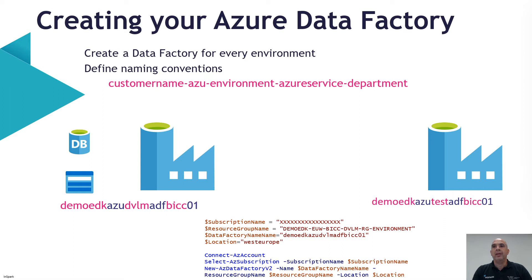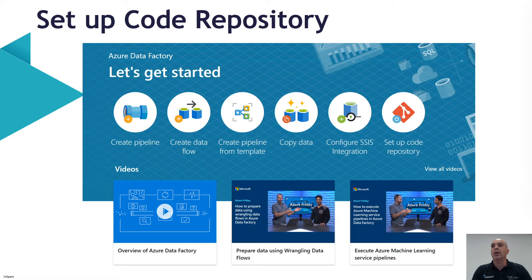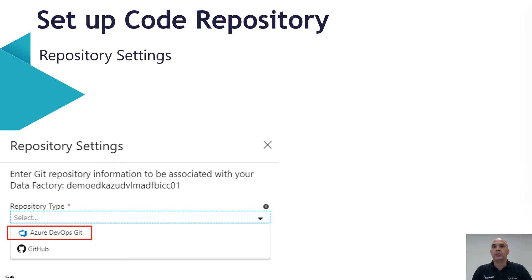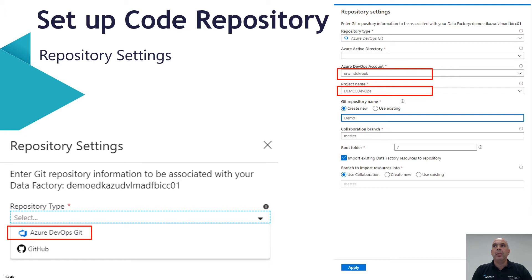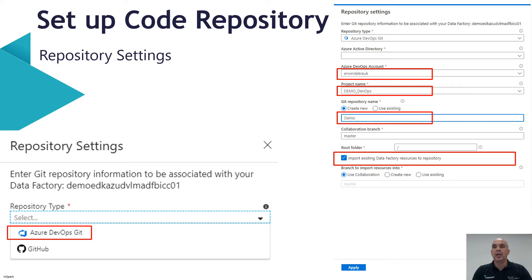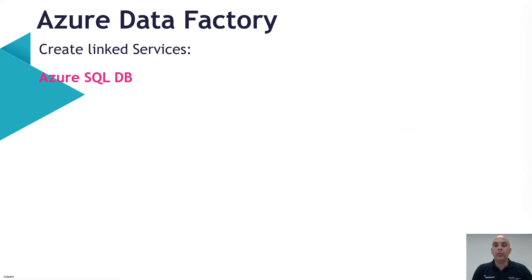Once we have created our data factory, we want to connect it to our Azure DevOps repository. That's easy to do. Once you click the 'Setup Code Repository' button, a new screen appears where you can select the repository type — Azure DevOps Git or GitHub. In this case, we're going to use Azure DevOps Git. You select the Azure Active Directory, the DevOps account, the project name, create a new repository name, leave the collaboration branch on master, and import existing data factory resources to the repository.